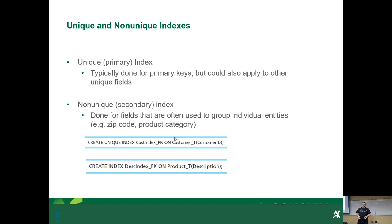And then you've got non-unique indexes. Those are for fields that are often used to group individual entities. In other words, you're going to search for a zip or a postal code, product categories, phone numbers or cities, that kind of thing.